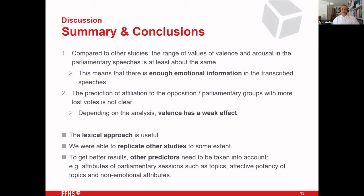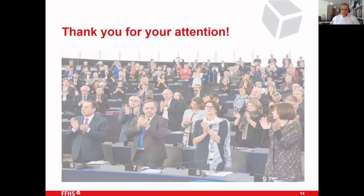To conclude: compared to other studies, the range of valence and arousal values in the parliamentary speeches is at least as large, so we have enough emotional information for analysis. The prediction of opposition affiliation — parliamentary groups with more lost votes — is not clear; depending on the analysis and word list, valence shows a weak effect. The lexical approach is useful and we were able to partially replicate other studies. However, there are other predictors that should be included, most importantly the topics of parliamentary sessions, which may influence the emotional words used.